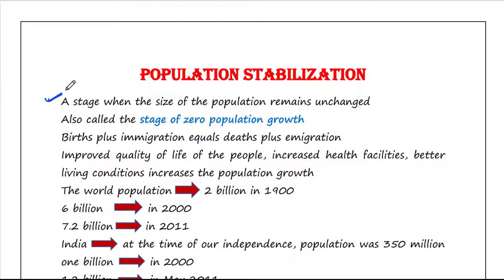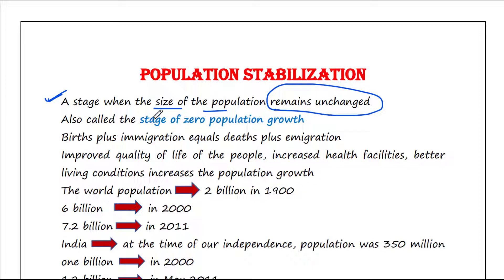Population stabilization is a stage when the size of the population remains unchanged. It is also called the stage of zero population growth. Population stabilization occurs when births plus immigration equals deaths plus emigration.